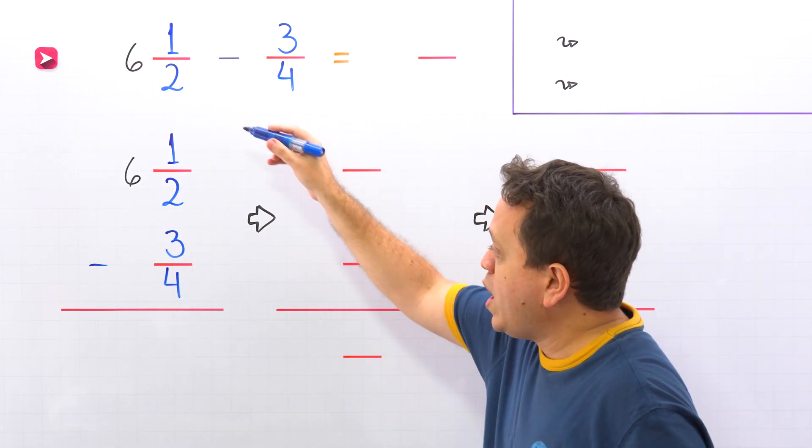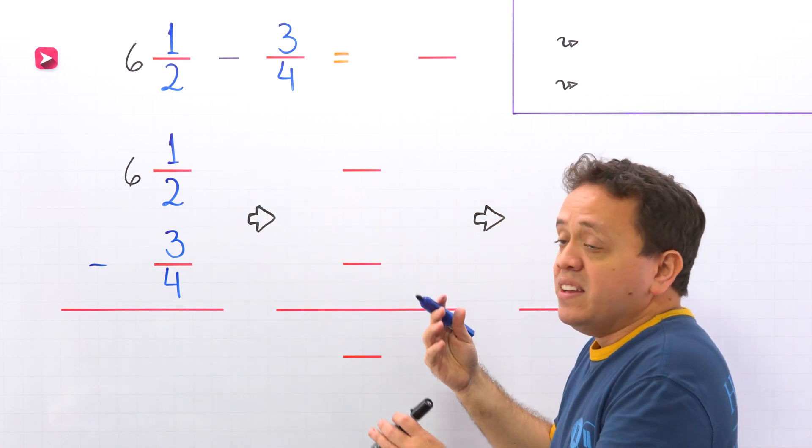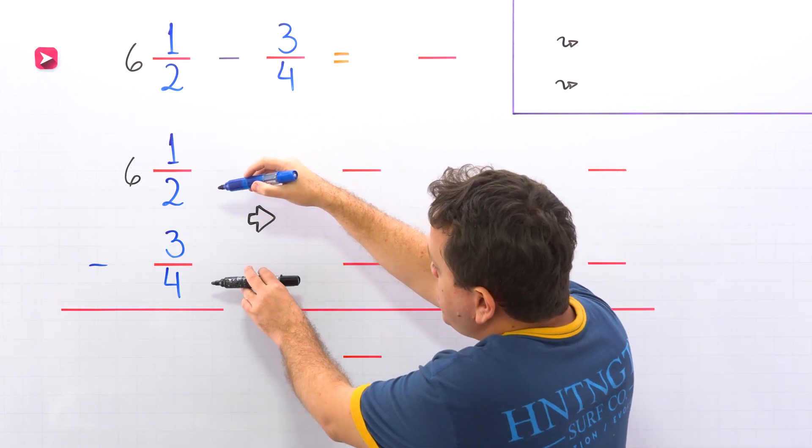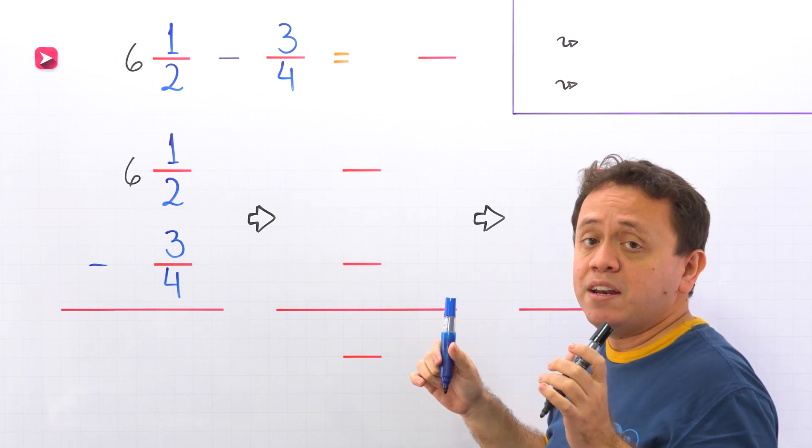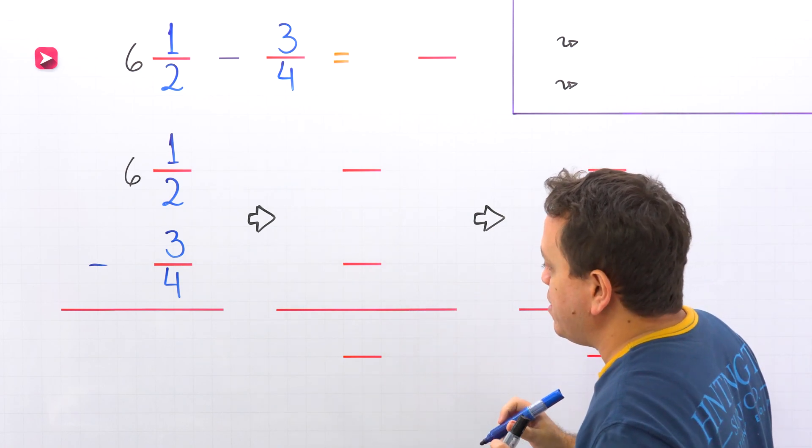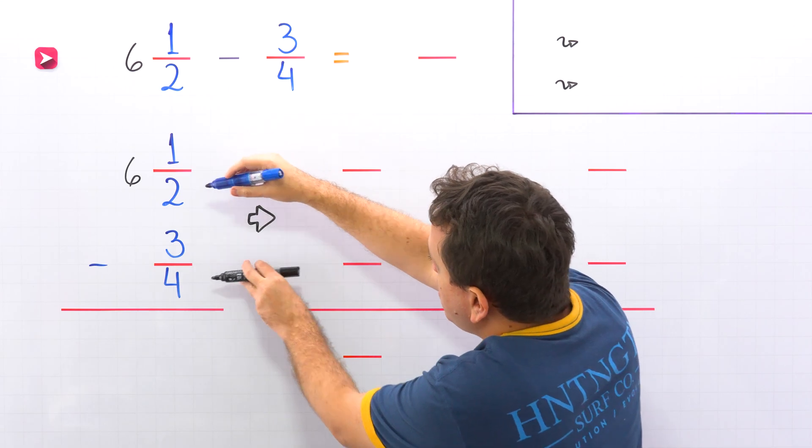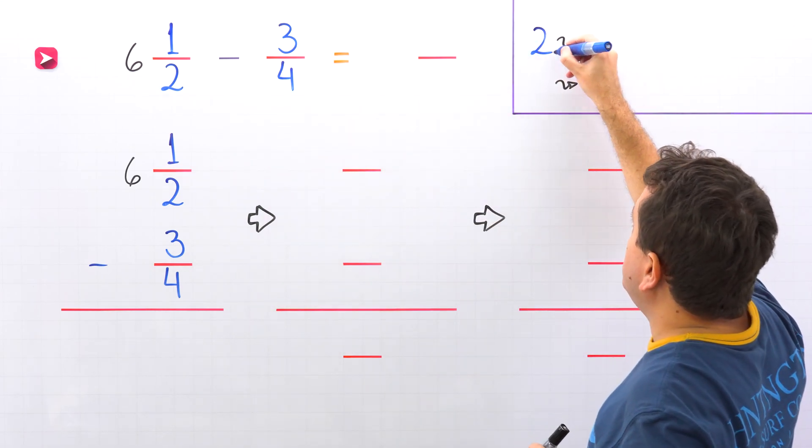Since these two fractions have different denominators, we need the least common multiple of the denominators or the least common denominator. The denominators are 2 and 4. Come over here, 2 and 4.